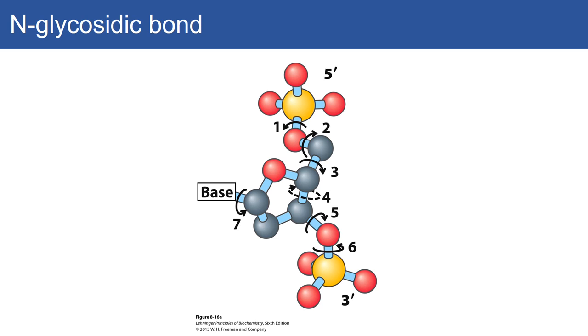Other important bonds are the N-glycosidic bond. We have fairly free rotation around the N-glycosidic bond that allows it to form the structure you see. There are torsion angles with free rotation between all these different structures.